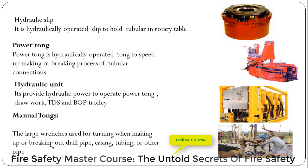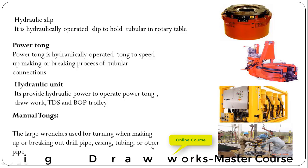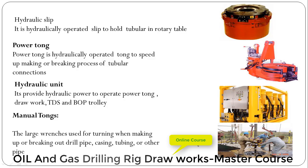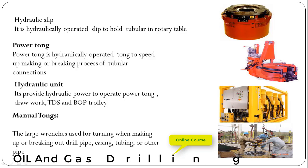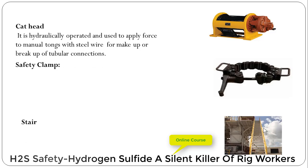Manual tong. These are the large wrenches used for turning when making up or breaking out drill pipe, casing, tubing, or other pipe. These are the manual tongs, and with the help of the cat head that is hydraulically operated, these tongs are pulled hydraulically to tighten the connection.